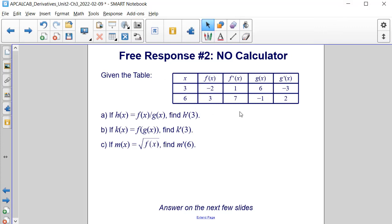Here is another sample free response question, this time without a calculator. We are given the table that has x, f of x, f prime of x, g of x, and g prime of x values that correspond to x values of 3 and 6.